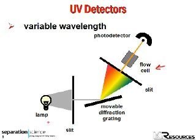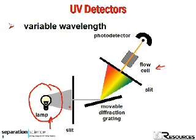Generally speaking, a deuterium lamp is used as the light source, and that generates a broad spectrum of wavelengths — usually in the 200 to 300 nanometer range. Part of this light goes through a slit and is imaged onto a movable diffraction grating, and the resulting spectrum is dispersed and imaged onto an exit slit that allows only a narrow range of wavelengths to pass through the flow cell.